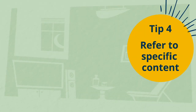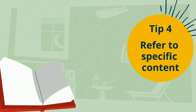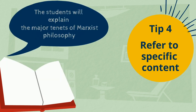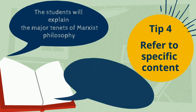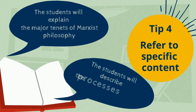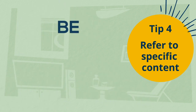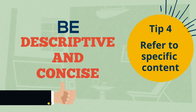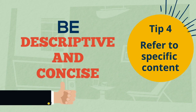Tip number four: refer to specific content in your learning outcome. For example, 'the students will explain the major tenets of Marxist philosophy,' or 'the students will describe the processes of cellular respiration.' You want to be descriptive and concise so that your students know exactly what to focus on.